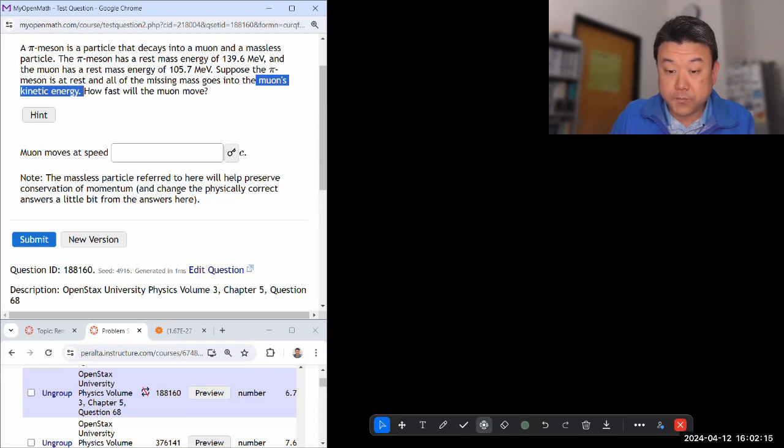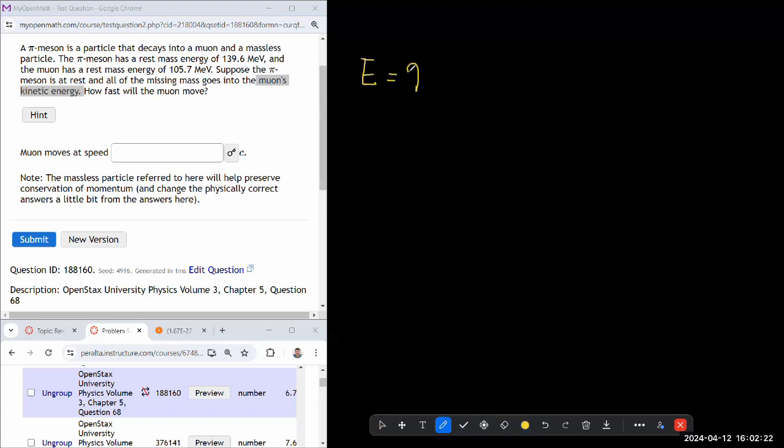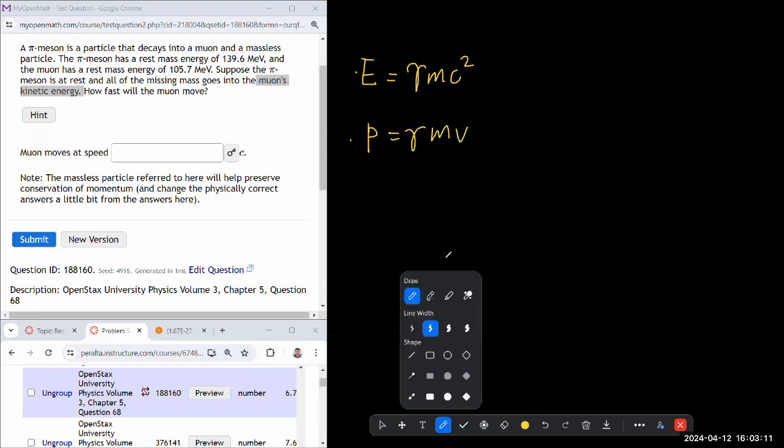Let me write down some formulas just to jog my memory. I have the relativistic energy is equal to gamma mc squared, and I have relativistic momentum is gamma mv. So I have written those down.